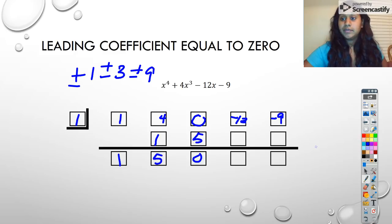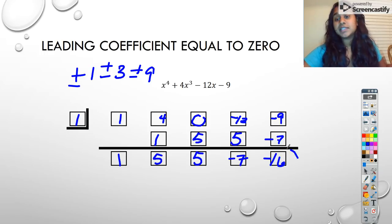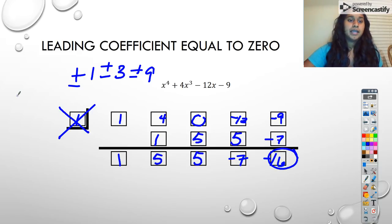Okay, that's 5, that's still 5, that's negative 7, that's negative 7. And this is going to be negative 16, which is not a remainder of zero. So that tells me that my positive 1 root is an impossible value. It is not a rational zero. It could potentially be an irrational zero.